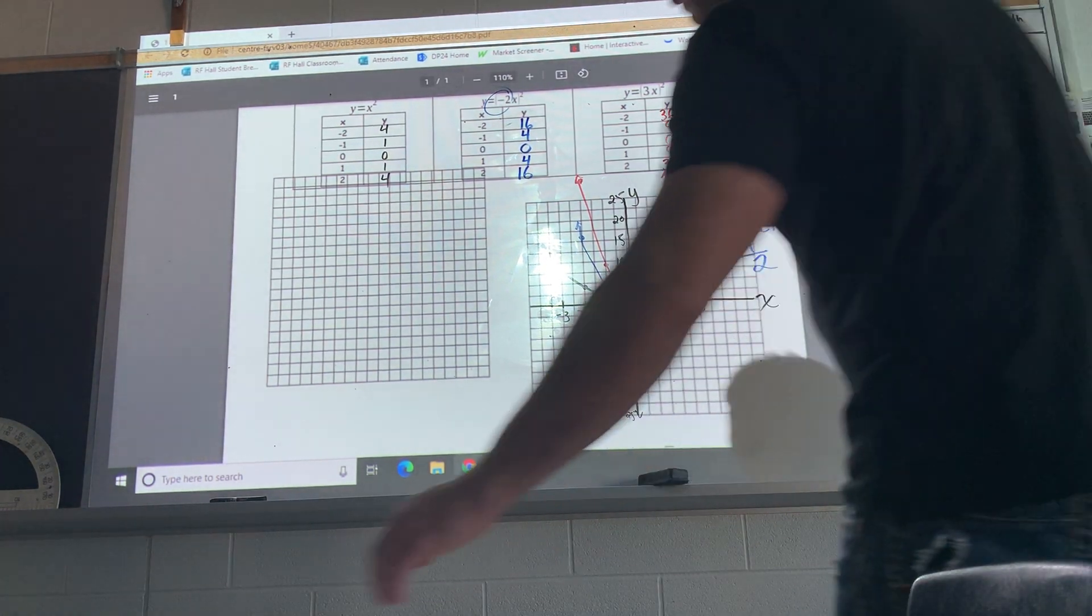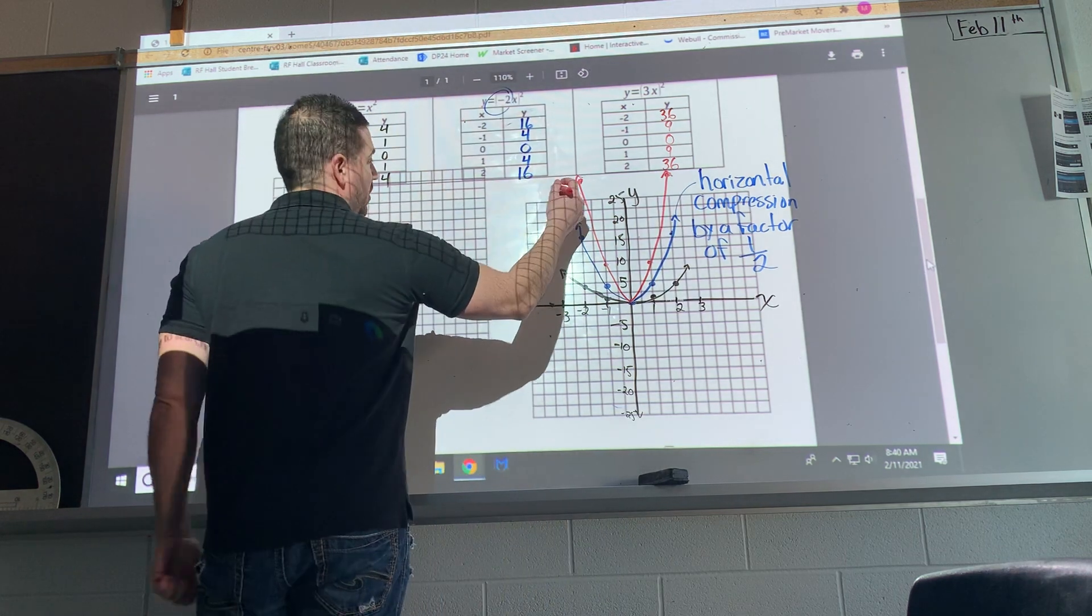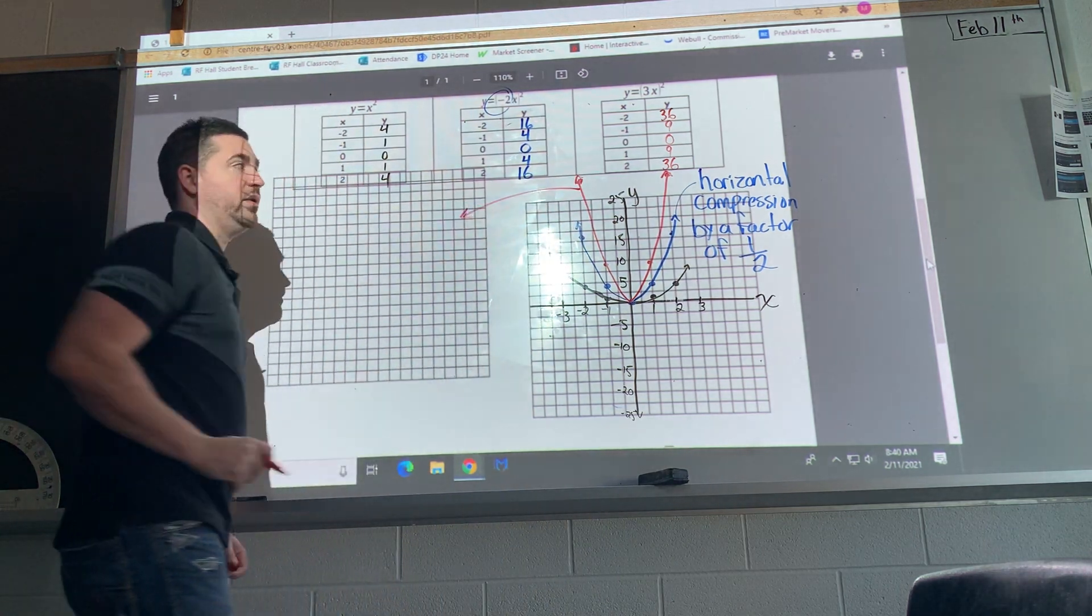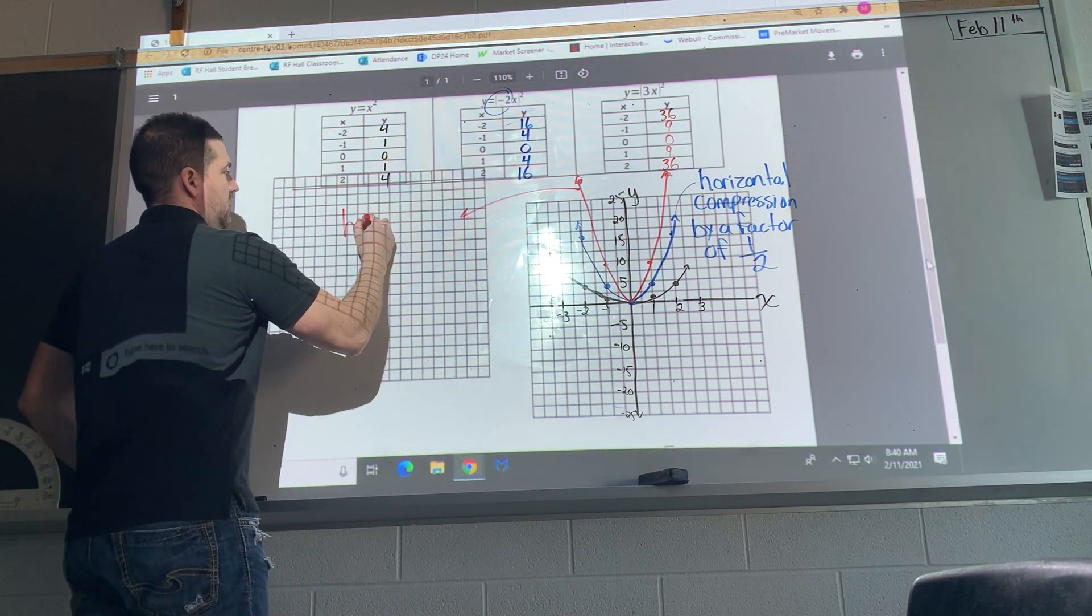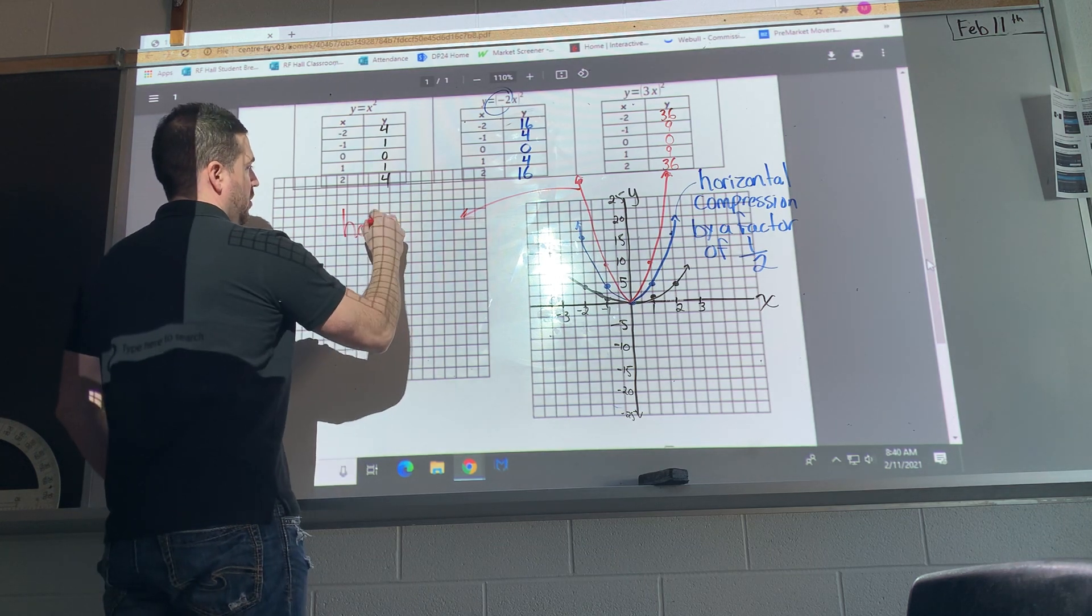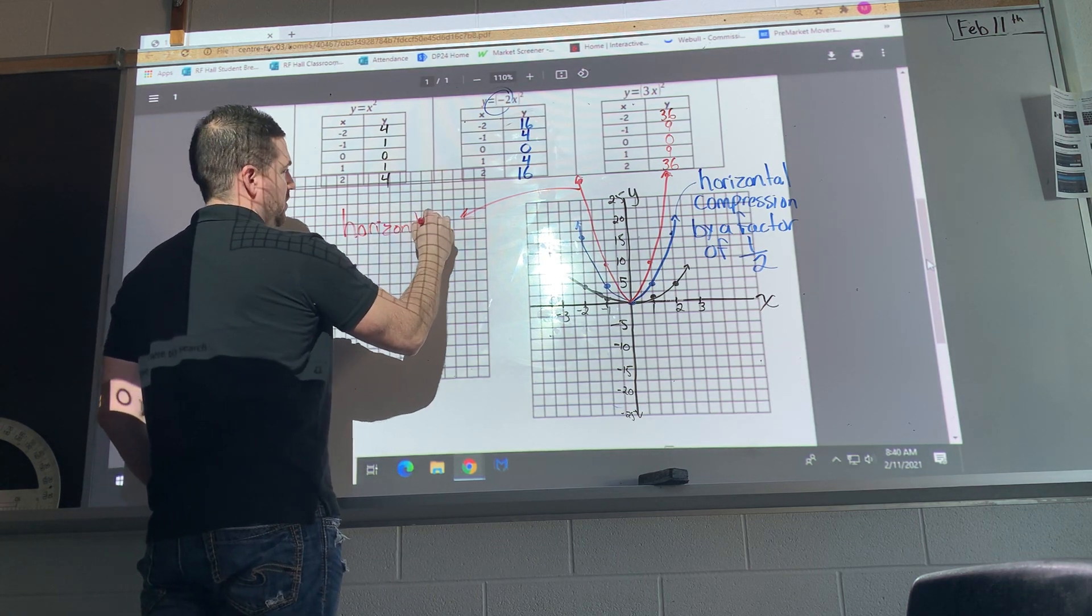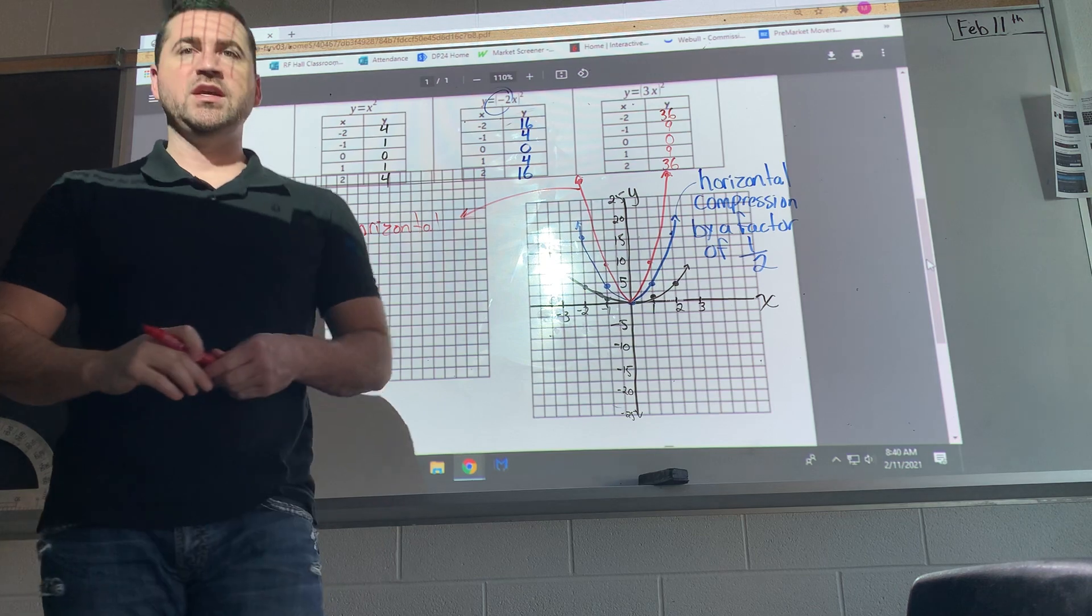All right, likewise, what would be, what would we say about the red one? Horizontal what, what would we say about the red one?